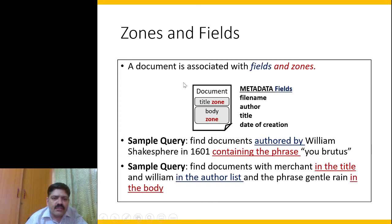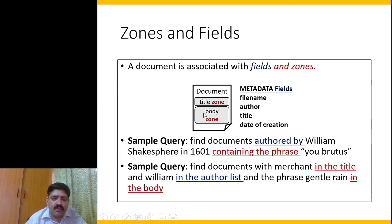We associate a document with fields and zones. Any content that is searchable is what we call a zone. So a title which is searchable is a zone, and the body which has searchable content is also a zone — these are different zones of a document. We also have several fields.